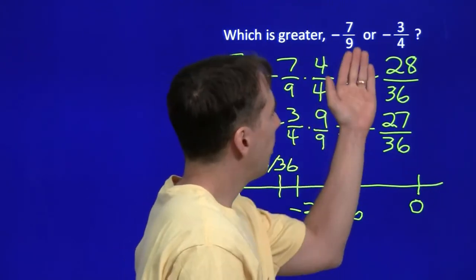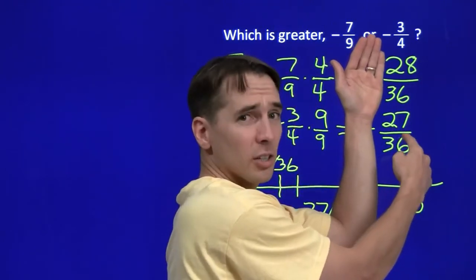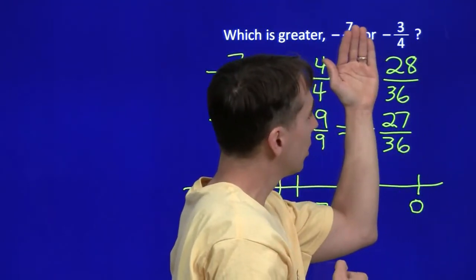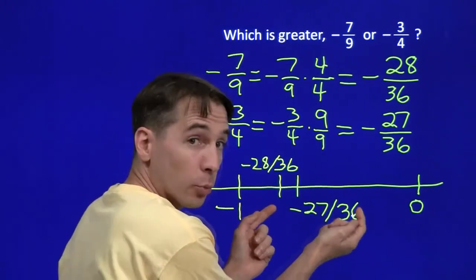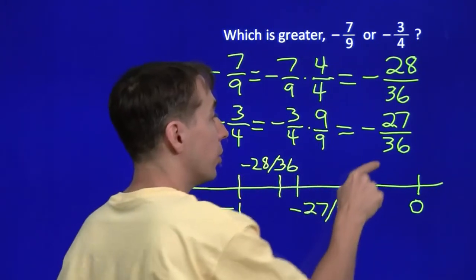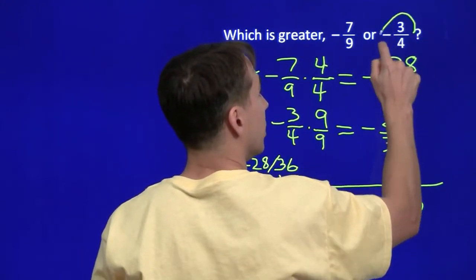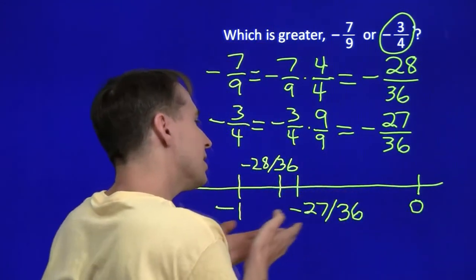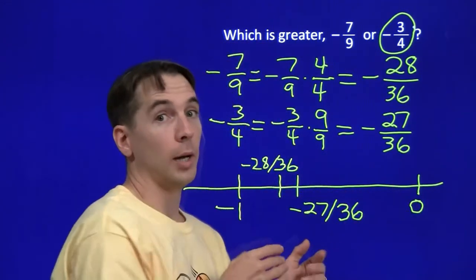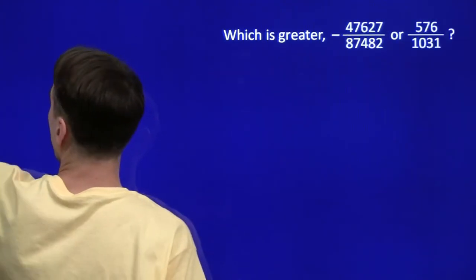So now, back here when we saw this was positive, 28 over 36 greater than 27 over 36. But when they're negative, negative 27 over 36 ends up to the right of negative 28 over 36, so negative 27 over 36 is larger. And that's the one that equals negative 3 quarters. And our key step there was think of the number line. Remember, fractions are numbers. Let's try another one.